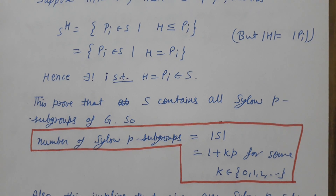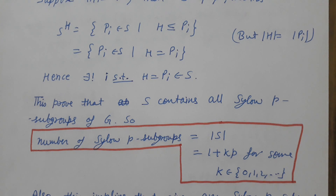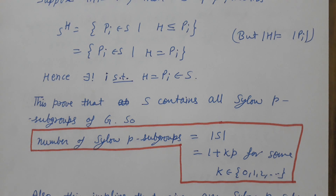And |S| is of the form 1 + kp for some k in {0, 1, 2, ...}. So: starting from one Sylow p-subgroup P1, taking all its conjugates, we proved that any Sylow p-subgroup of G lies in S, and the order of S has the form 1 + pk.